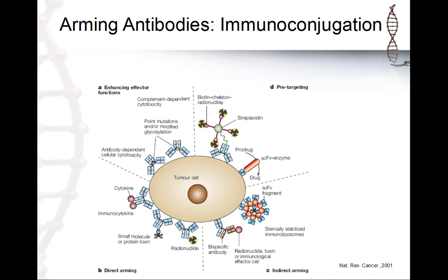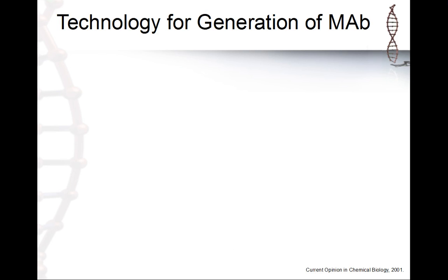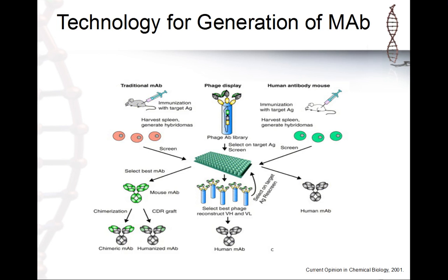The three main technologies for generating monoclonal antibodies are: first, the traditional approach where you immunize mice, harvest cells from the spleen, perform screening, and then use the antibody. Second, phage display, where you clone your monoclonal antibody library into a phage which displays it on its surface.